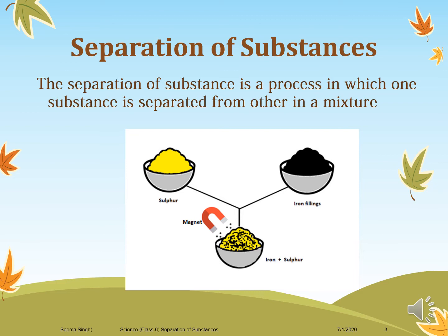For example, in the image we can see a mixture of iron and sulfur in a bowl, and we need to separate iron from sulfur. Since a magnet is something to which iron filings are attracted, we use the magnet to attract the iron filings, and the iron is thus separated from the sulfur. This is one method we can use when we want to separate any mixture containing iron.